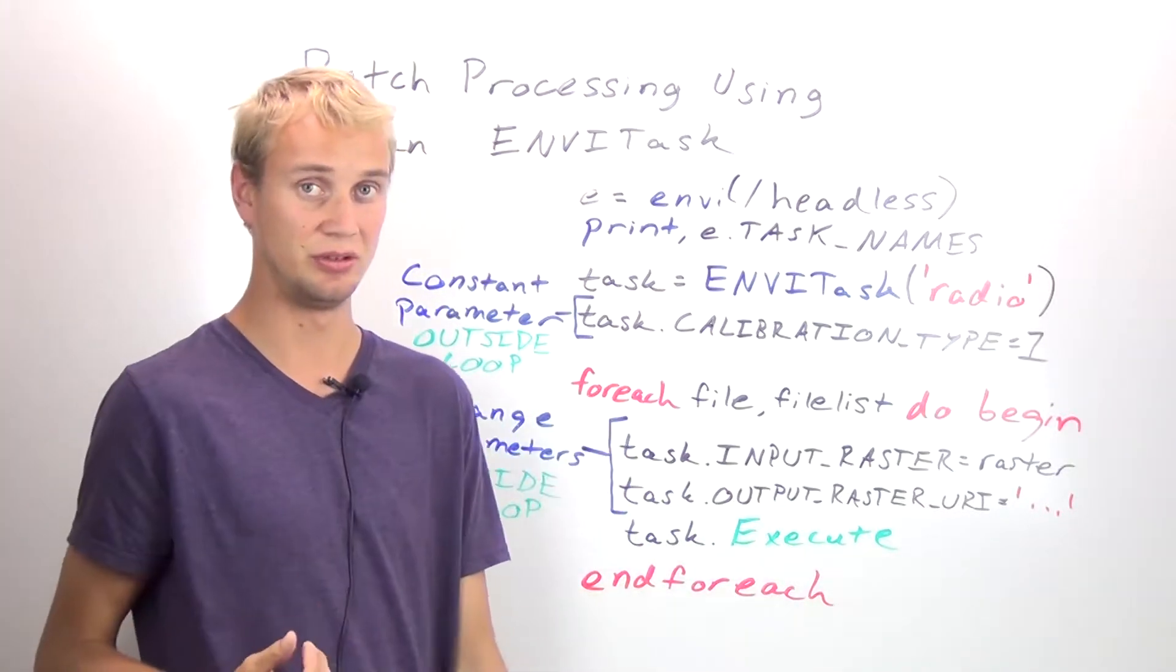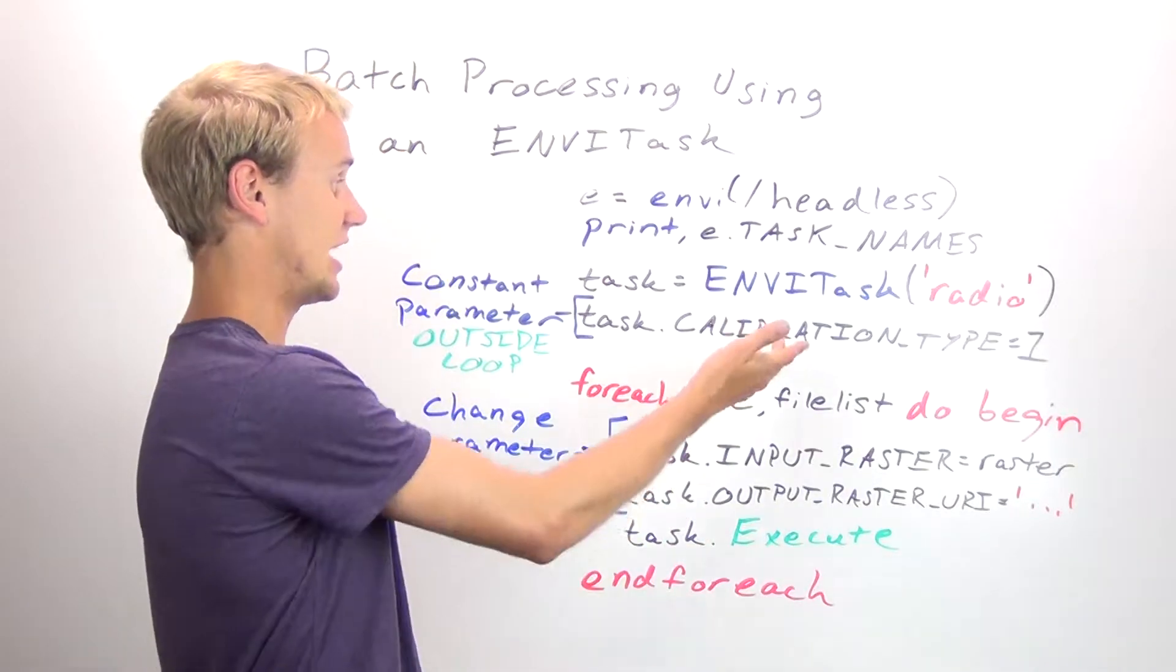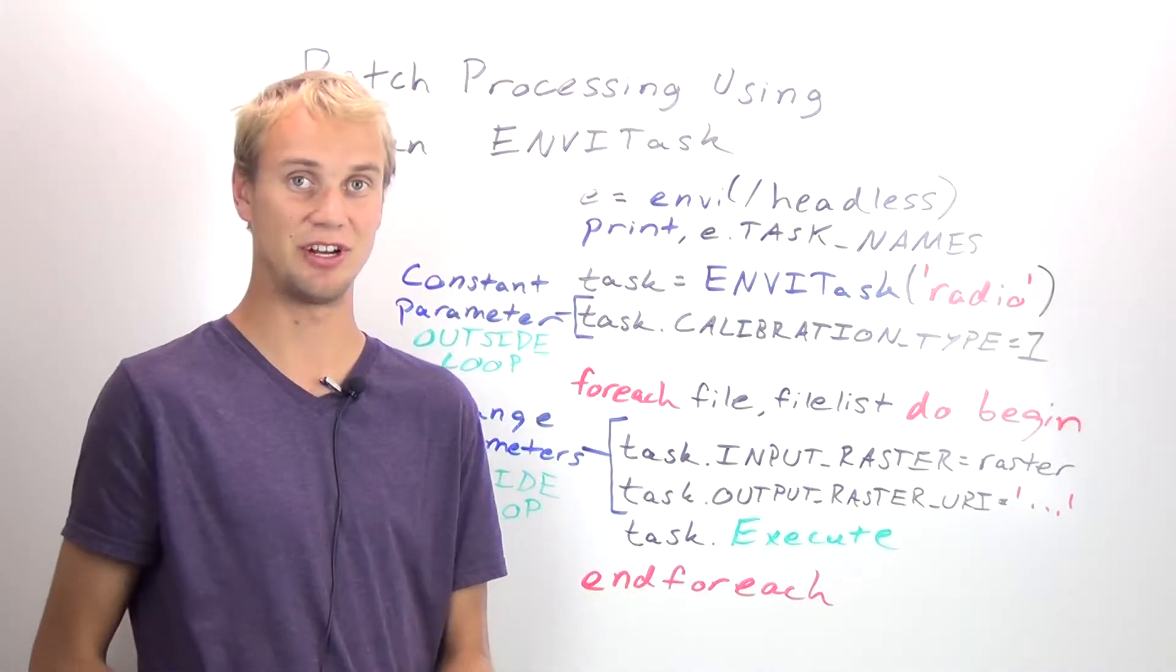The second thing you need to do with Envy 5.1 is to start an Envy task. In this case, we're going to start radiometric calibration.